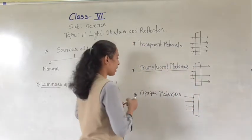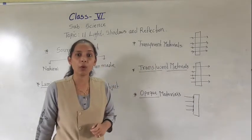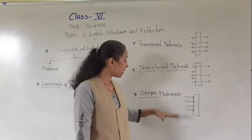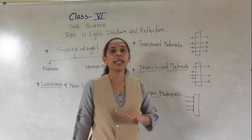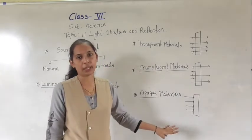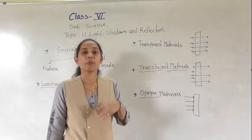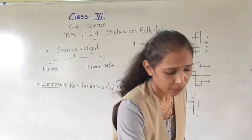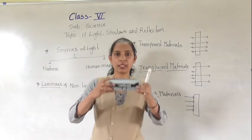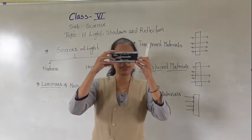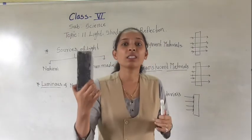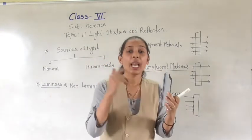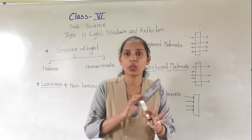The last type is opaque material. An opaque material does not allow any light rays to pass through it. Through opaque material we cannot see anything. For example, this duster — if I put this duster in front of my eyes, I cannot see anything in front of me, because the duster is an opaque material that does not allow light rays to pass through it.